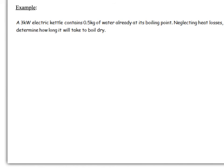So we'll need the total amount of energy required to boil it dry. Essentially, boiling it dry would mean we boiled all the liquid water into water vapor. So ML, we've got 0.5 kilograms of water and the latent heat of vaporization of water is 2.26 times 10 to the 6.